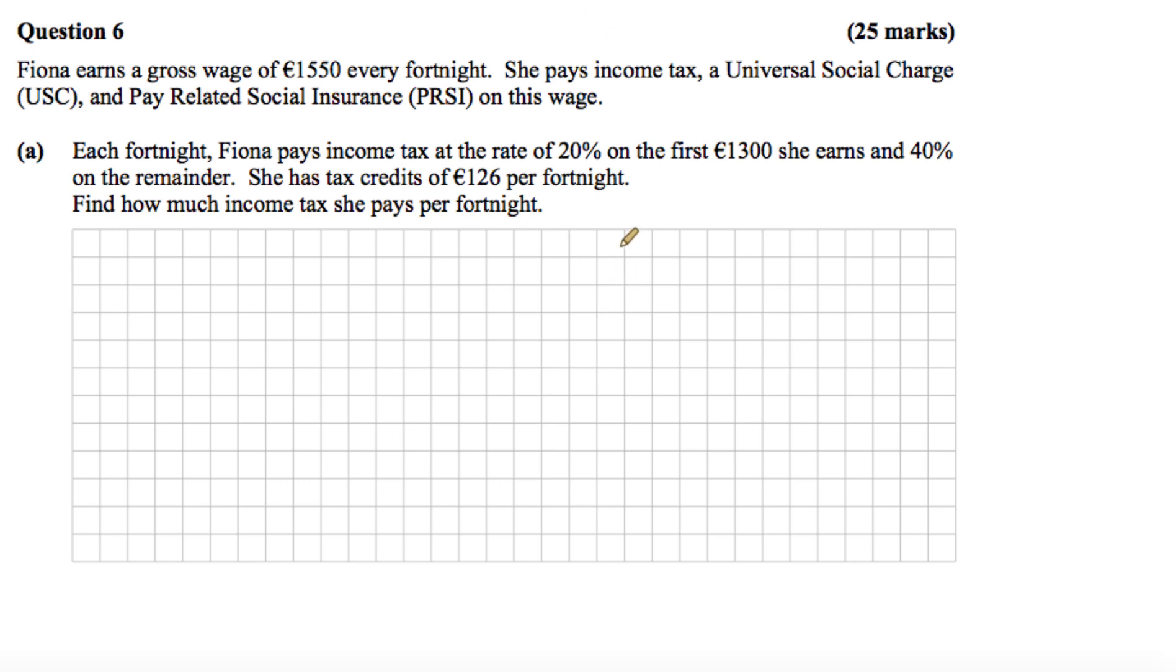Okay, so this is the 2016 Leaving Cert Ordinary Level Paper 1, and we're looking at question number 6. Fiona earns a gross wage of €1,550 every fortnight. She pays income tax, the Universal Social Charge (USC), and Pay-Related Social Insurance (PRSI) on this wage. Part A says each fortnight Fiona pays income tax at the rate of 20% on the first €1,300 she earns, and 40% on the remainder. She has tax credits of €126 per fortnight. Find how much income tax she pays per fortnight.